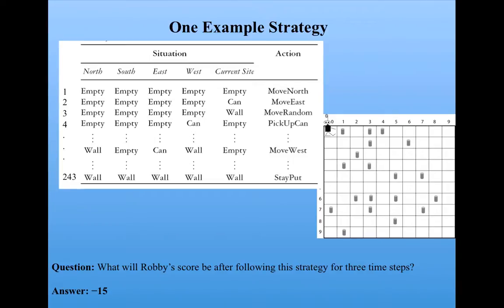So he would get a minus fifteen after three time steps. So what we want the genetic algorithm to do is to use evolution to weed out these kinds of really stupid strategies and to find the good strategies.